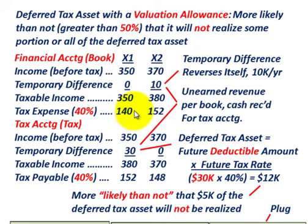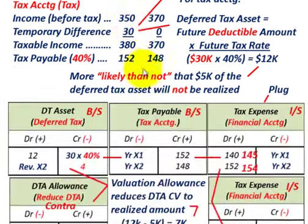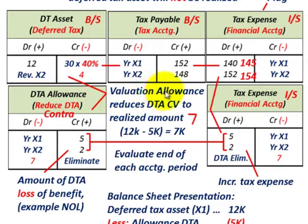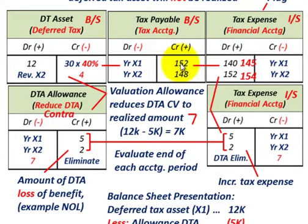Let's look at our accounts. We need to set up our taxes payable — a liability account on our balance sheet — the deferred tax asset we calculated, and then based on that, our tax expense. For the valuation allowance account, that's a deferred tax asset allowance — a contra account — which we'll look at in detail. Starting with taxes payable: for year X1, we credit $152,000, and for year X2, we credit $148,000.